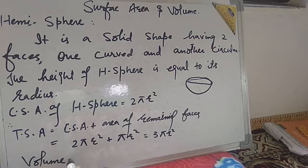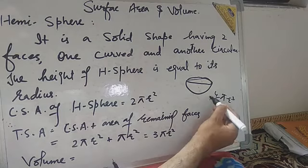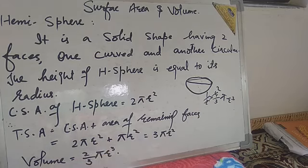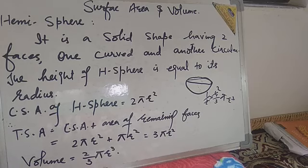The volume of a hemisphere — since it is half of a sphere, and the sphere's volume is 4/3 πr³, half of that is 2/3 πr³. This is the volume of a hemisphere. Now in our syllabus we have another solid shape — the frustum of a cone, which is very important and new. In the next video we will discuss and derive everything about the frustum of a cone. Till then, Allah Hafiz.